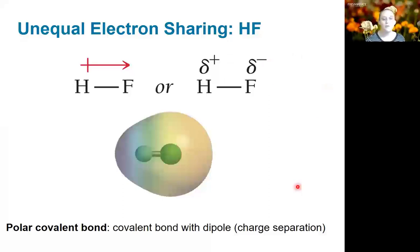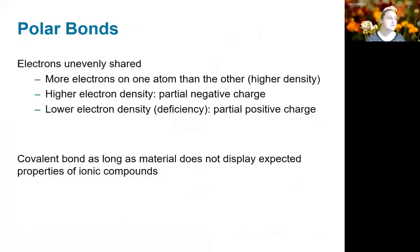Polar bonds happen when we have unequal sharing of electrons. If we have more electrons on one side of the atom than the other, there's going to be a higher density of electrons associated with a higher negative charge. And if we're thinking about where we draw the line between a shared electron and a transferred electron, it really ultimately comes down to the properties of the material. If it has the same properties as an ionic compound, we would classify it as ionic. Otherwise, it gets classified as polar covalent. We'll talk a little bit more in just a minute about where you would make that distinction.